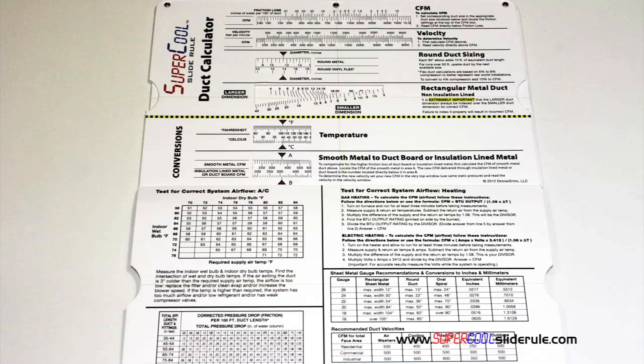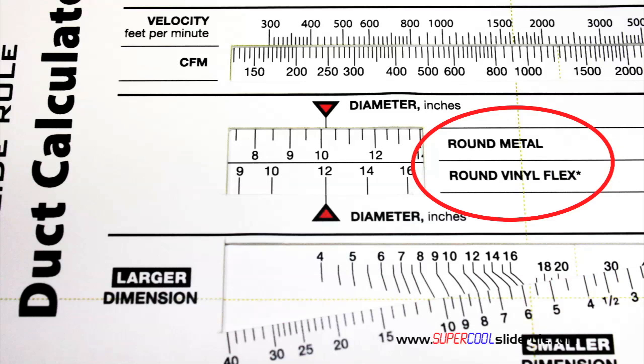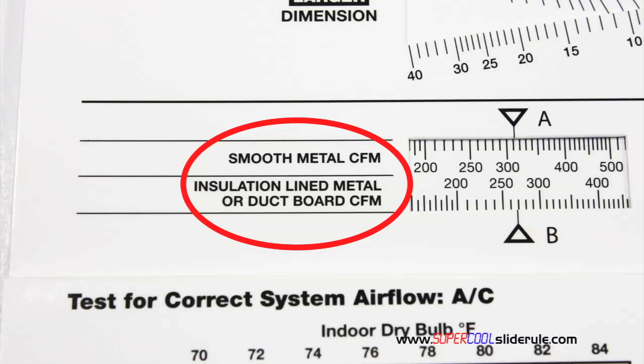Inside, it is packed with even more information. It performs sizing of both metal and flexible duct. It has the only direct reading conversion from smooth metal to insulation line metal we've ever seen.